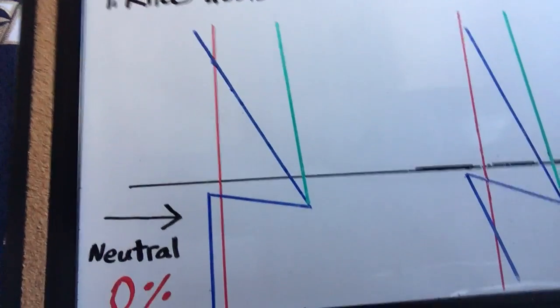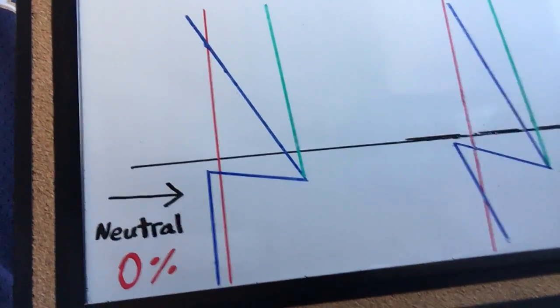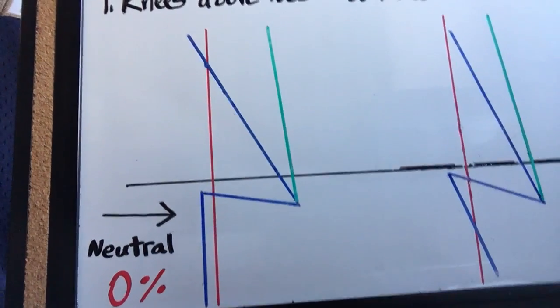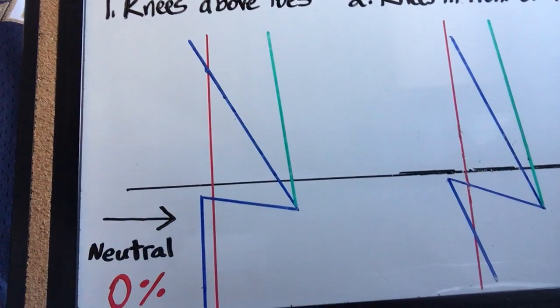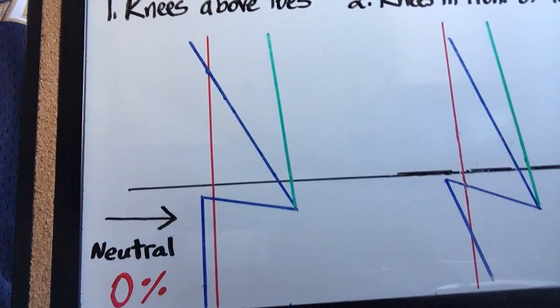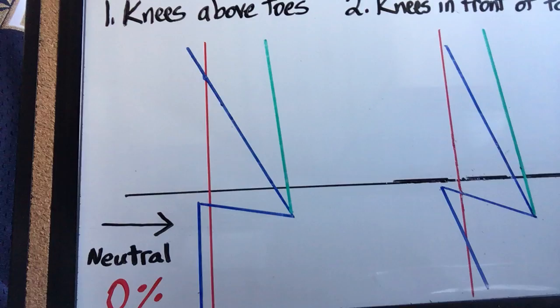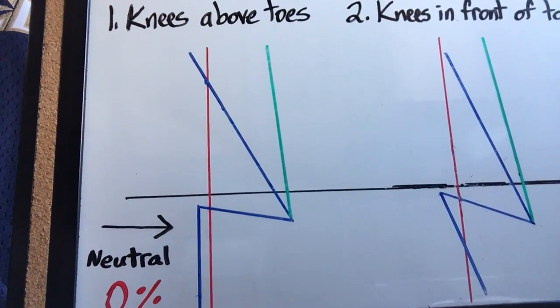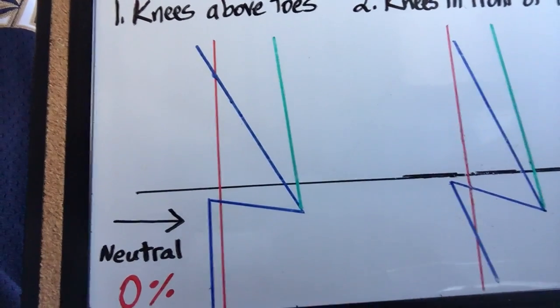So the first position here, we've got the knees above the toes. We've got three levers: the shin, the thigh, and the torso. There's two torso levers, a blue one and a green one. That just represents where the torso would be if you're doing a front squat or a back squat. The green would represent where your torso would be when doing a front squat and the blue one doing a back squat.